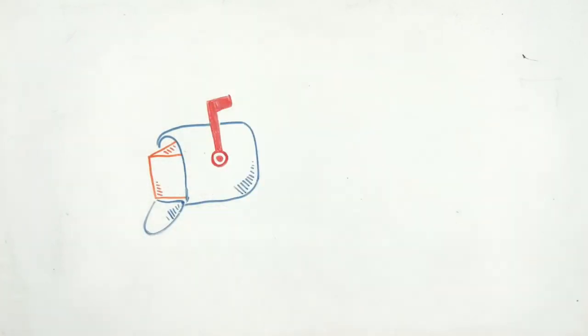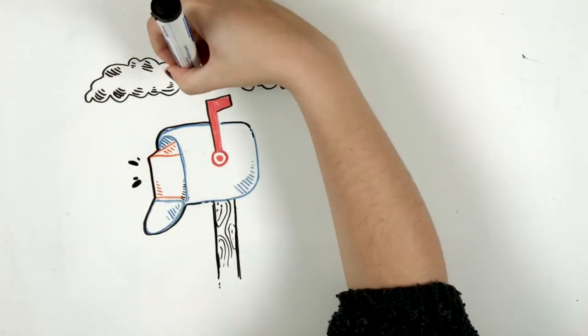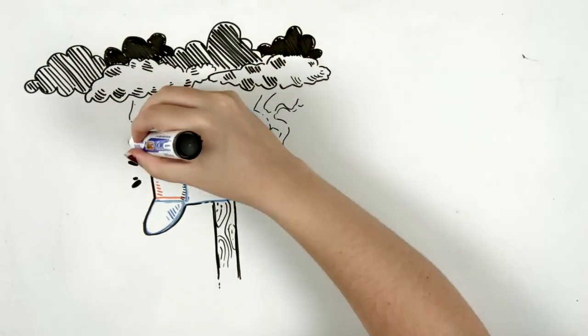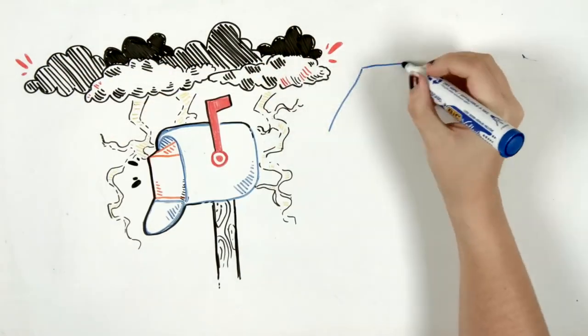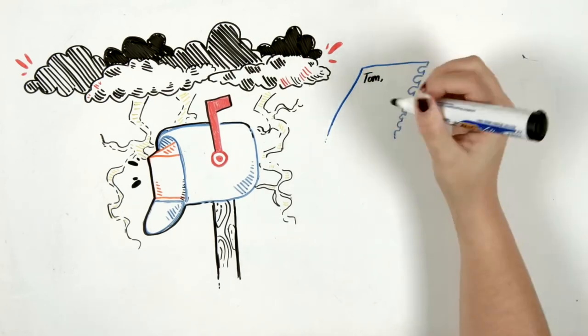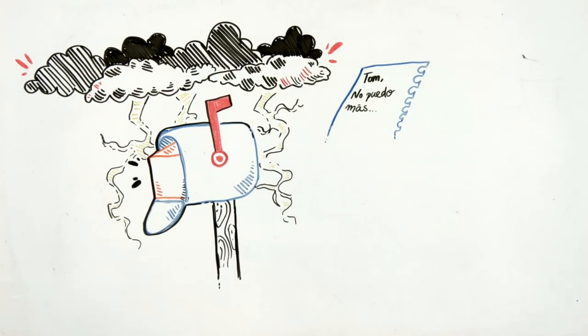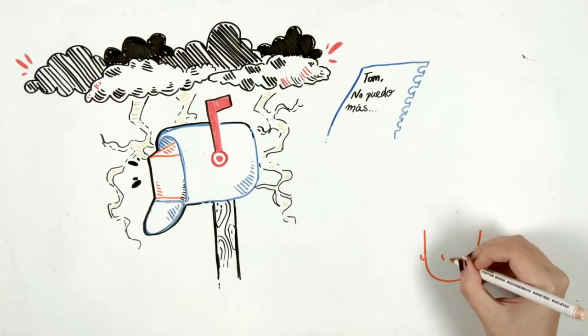This story started on a nice summer afternoon when Tom saw the mailman put something in his mailbox. He found the box and a note that said, Tom, I can't take it anymore. I had to get rid of this thing somehow before it was too late and was hoping you'd do it for me.